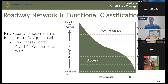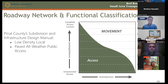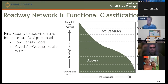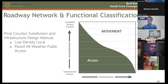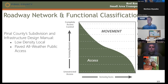Moving on to roadway network and functional classification — functional classification is a hierarchy of road types providing two main functions: movement and access. The hierarchy includes interstates, freeways, principal arterials, minor arterials, collector roads, and locals. Interstate 10 has the highest level of movement but the least access, while local roads have the most access but carry the fewest vehicles. Pinal County also includes classifications like low-density local and paved all-weather public access.